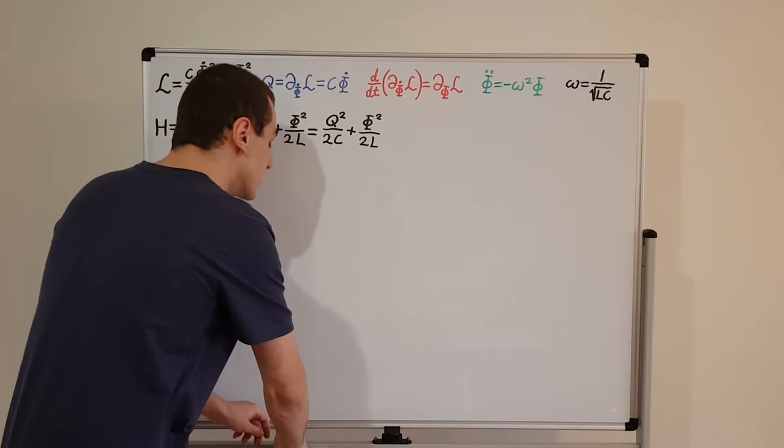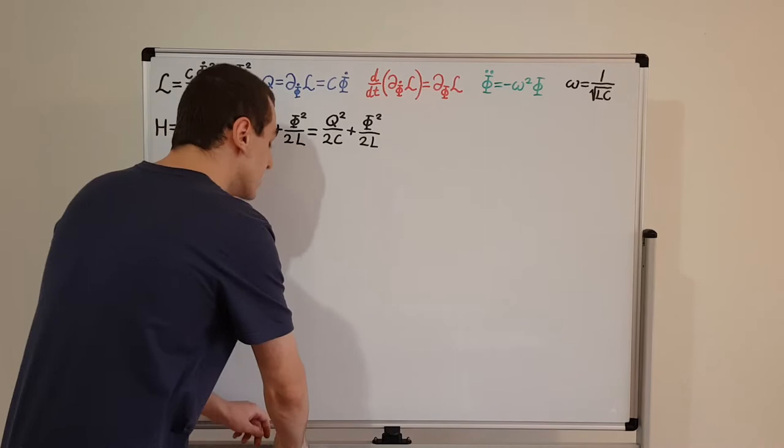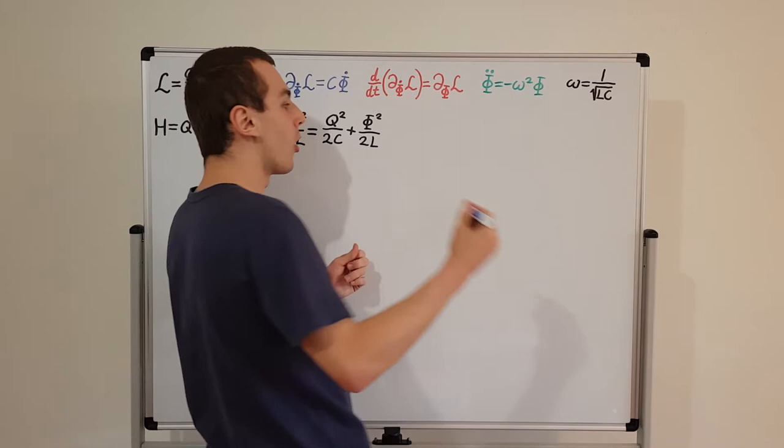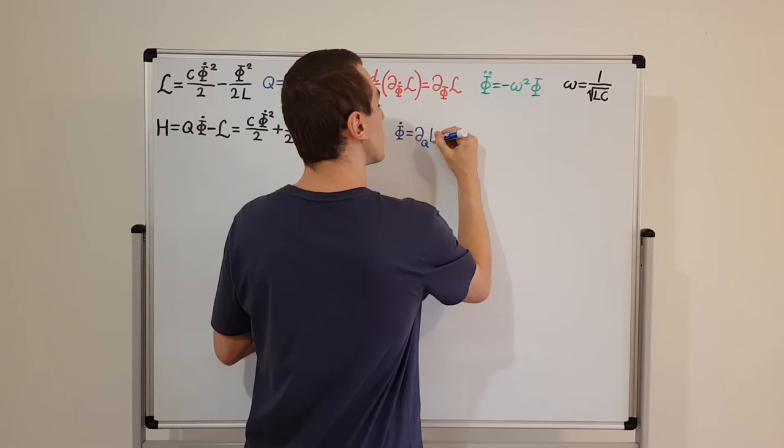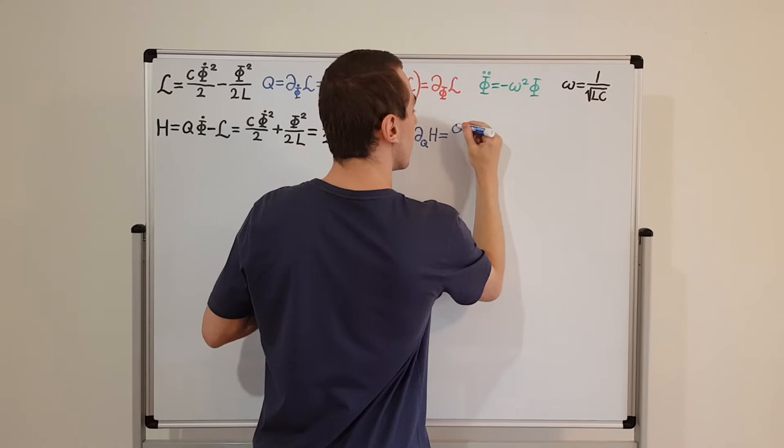Now let's use Hamilton's equations. First, phi dot: the time evolution of the magnetic flux. Phi dot is equal to the partial derivative with respect to Q of the Hamiltonian. Using the power rule, that gives us Q over C.